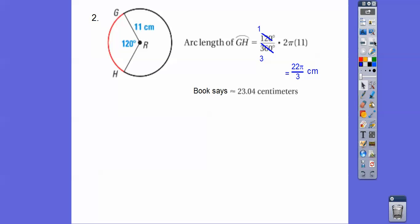Alright, your book might round it to a decimal. I like this answer much better, but how they did that, 22 times 3.14, whatever that was, divided by 3.